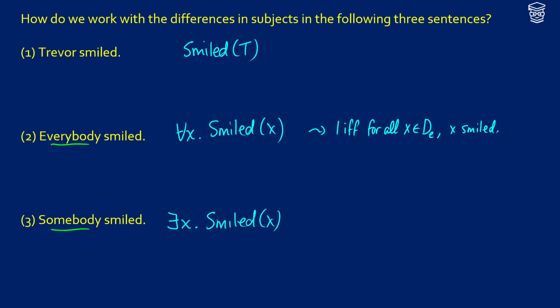Here's what I suggest. With 'everybody,' we have: for all X. We don't know what the predicate is, but we do know that X is going to apply to it. So we're going to introduce an arbitrary predicate that we'll fill in, then introduce lambda P outside of that. We'll take the function for 'smiled' and have lambda P dot for all X, P(X) apply to the argument lambda X dot X smiled.